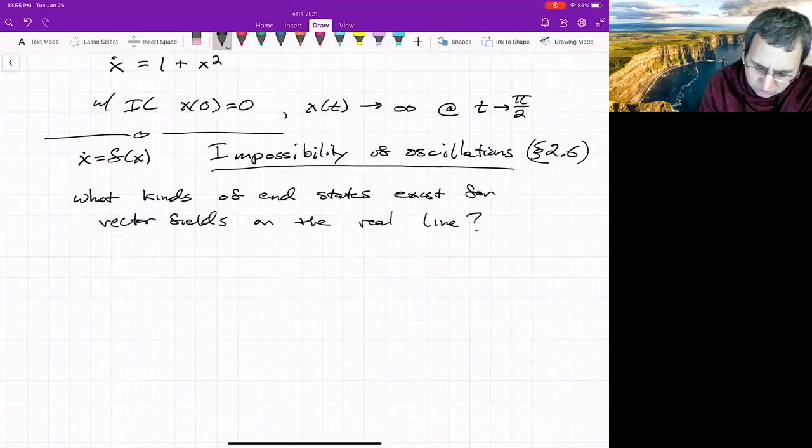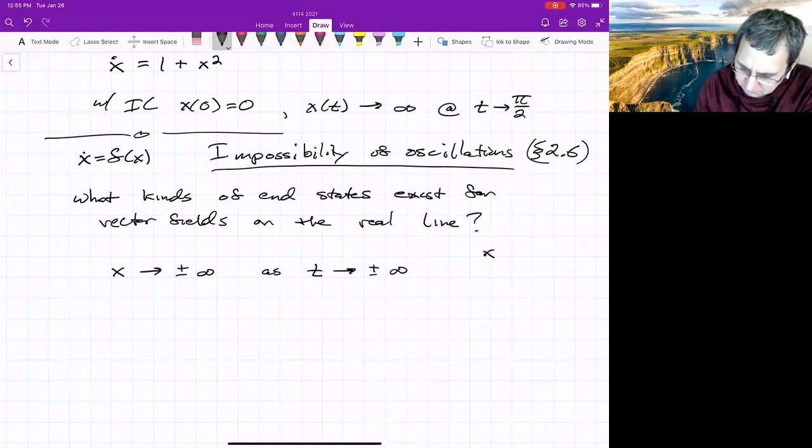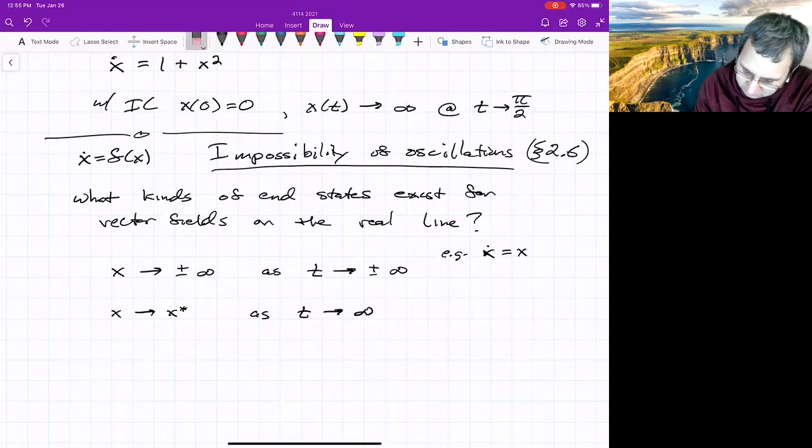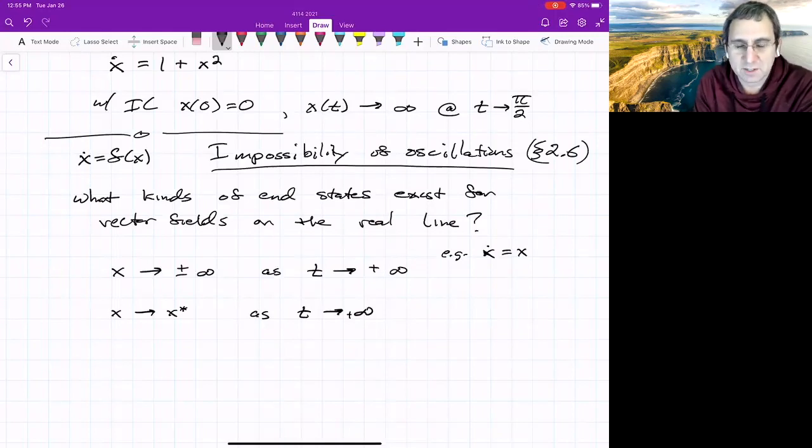And there really aren't that many. You could have x goes to plus or minus infinity as t goes to plus or minus infinity. For example, x dot equals x just increases exponentially, goes to infinity. You could also have that x goes to some finite point as t goes to infinity. So you end up at a fixed point.